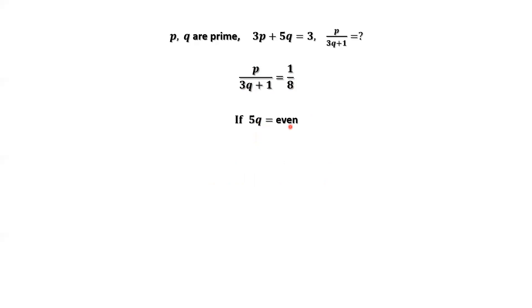For the second situation, 5Q equals even. This implies Q equals 2. Because Q is a prime number, we only have one even prime number, which is 2.